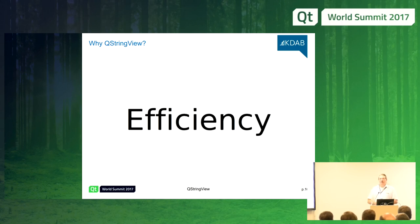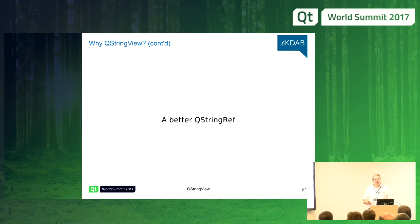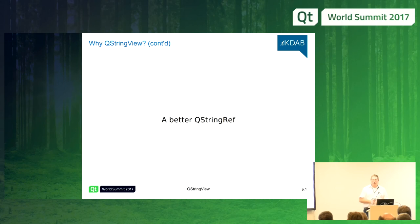The next idea you might have: we already have QStringRef, why not use that? We do use it all the time. But QStringRef has one problem — it's tied to QString. You can construct a QStringRef from a QString and get efficient substringing, trimming, left and right. But if you don't come from a QString, you need to construct a QString first. You cannot just take a char16_t literal and call a QStringRef function. And QStringRef is not a trivial type; for binary compatibility reasons in Qt5, it needs to stay a complex type.